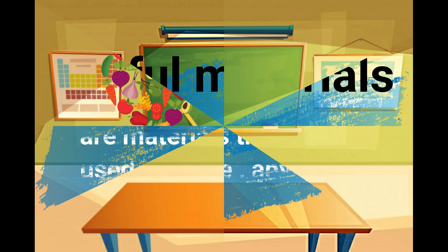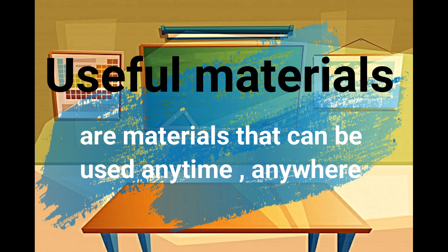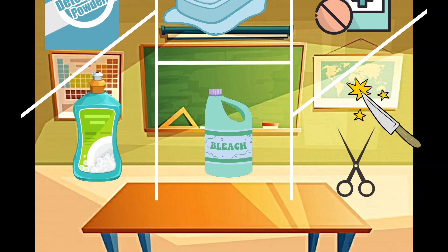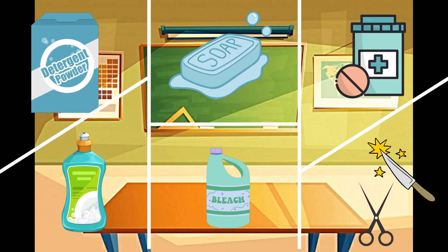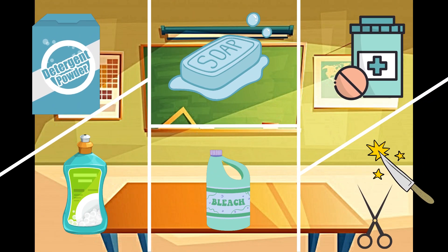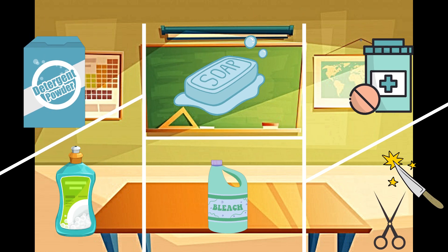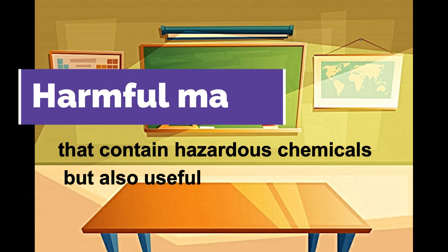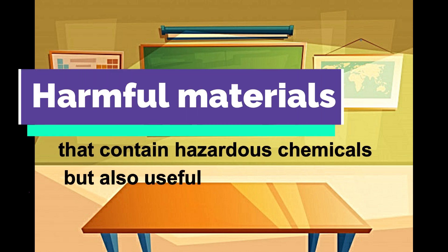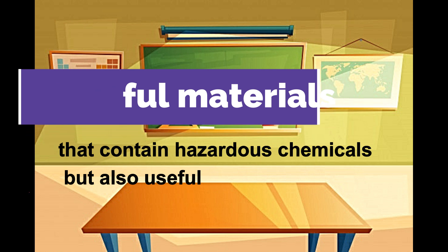All of these materials that we usually use at home are useful to us. But there are some materials that contain chemicals such as detergent, dishwashing liquid, soap, shampoo, bleach, medicines, and even sharp and pointed objects that can be very harmful to us if we do not use or handle them properly.